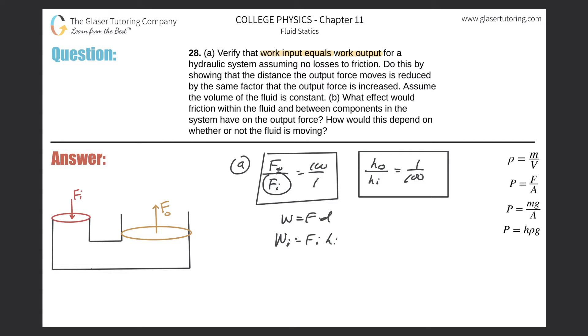If I substitute my values, my F_i, my input force, is 1, and my input height is 100. So 1 times 100 is obviously 100. What about the work output? That would be the force output times the output height. The output force was 100, the output height is 1. What's 100 times 1? 100. So these two are indeed equal.